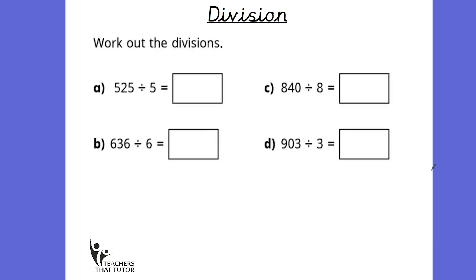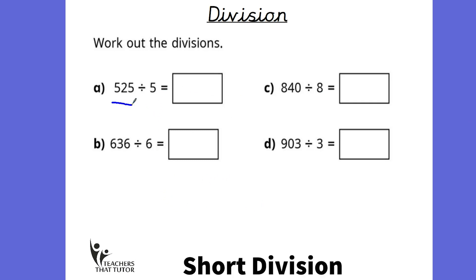So the children will be shown various different ways of dividing to really give them a depth of understanding. Finally, they'll move on to a short division method, and I'm going to show you how you might use this method to solve these sums. Let's take the first one. It's also known as the bus stop method. So we've got 525 divided by five. The large number goes underneath the bus stop and the small number outside the bus stop. So once we've set it up like this,